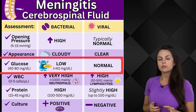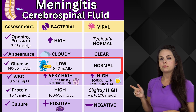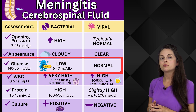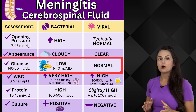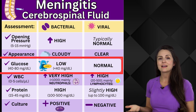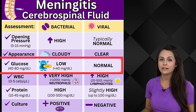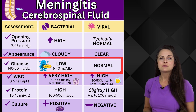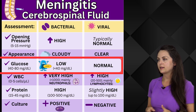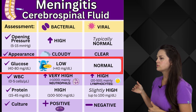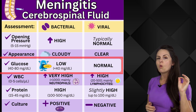The glucose in the CSF, in bacterial meningitis, is going to be low because the bacteria are eating them, so it's going to be less than 40. In viral, the glucose will be normal.